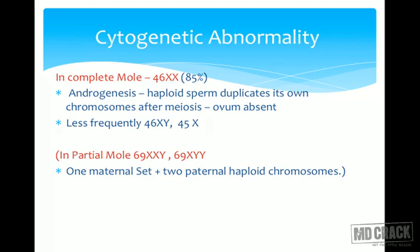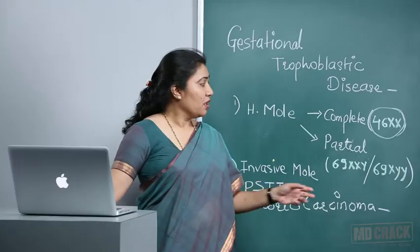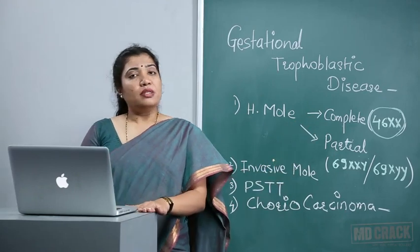In complete mole there is androgenesis: the haploid sperm duplicates its own chromosomes after meiosis, forming a mole — commonly 46XX in about 85%, but can also be 46XY or 45X. In partial mole, one set from the mother and two paternal haploid chromosomes unite, giving triploidy. These cytogenetic distinctions are very important.